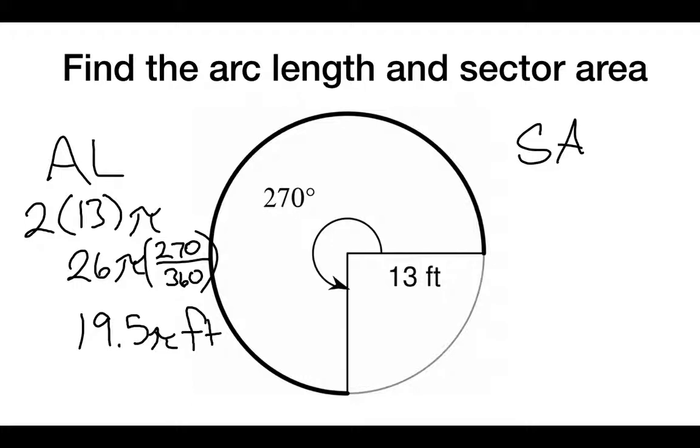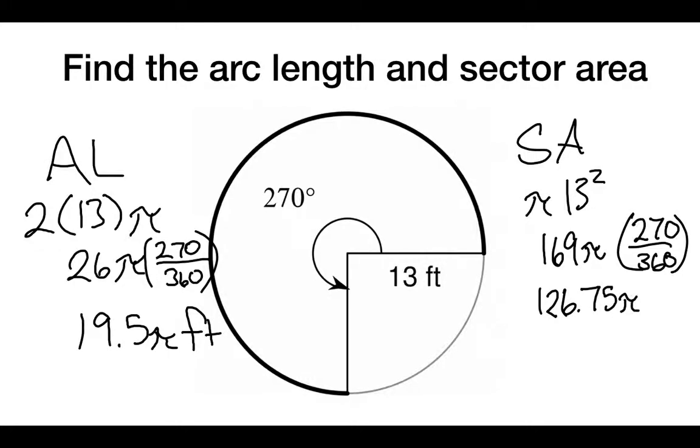So now let's talk about sector area. Once again, in this case, we're doing pi times 13 squared, or 169 pi. Now, after that, we once again multiply by 270 over 360. What we end up getting there is 126.75 pi feet squared.